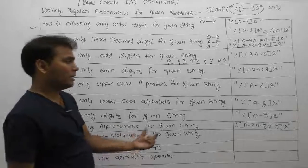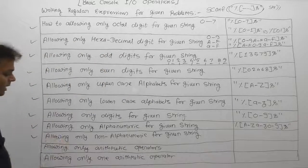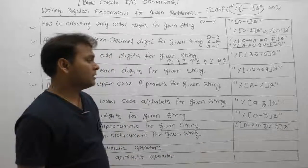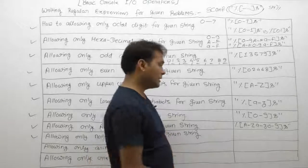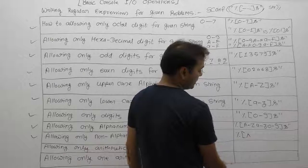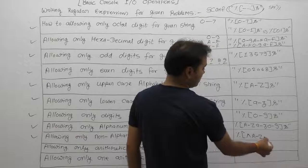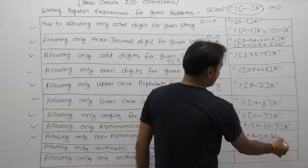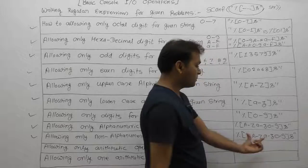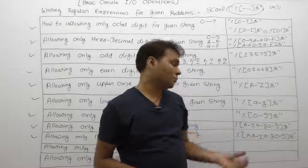Next, allowing only non-alphanumeric characters for a given string. Non-alphanumeric means the negation of alphanumeric. Negation is applied using the caret symbol inside the square bracket. It is the negation of the previous case — accepting everything except that range of alphanumeric symbols.